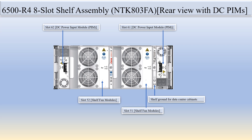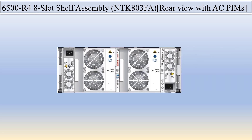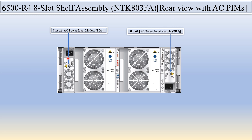This shelf assembly is designed for data center cabinets. Next, you can see the Ciena 6500 R4 eight-slot shelf assembly rear view with AC power. The difference from the previous view is the power module: the previous one had a DC power input module, and this one has an AC power input module. Slots 61 and 62 are the AC power input module.